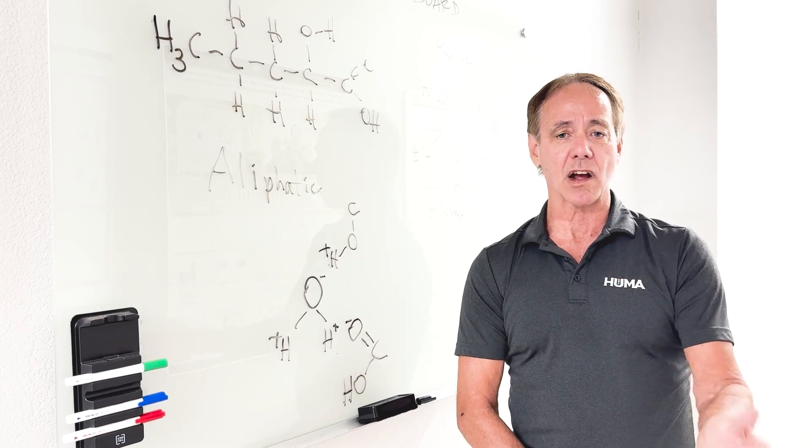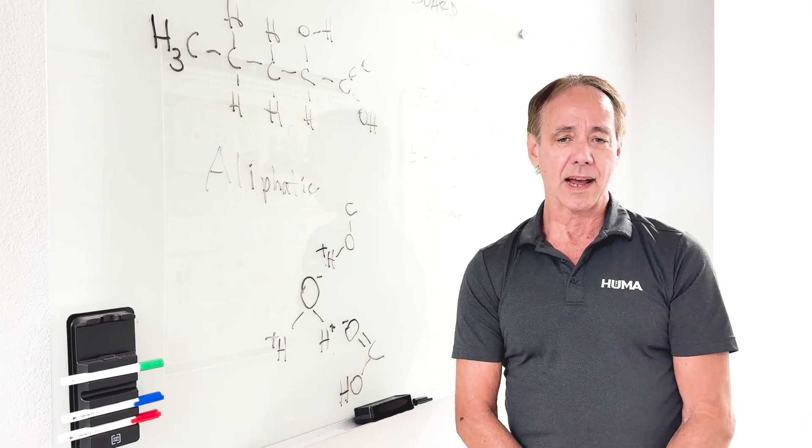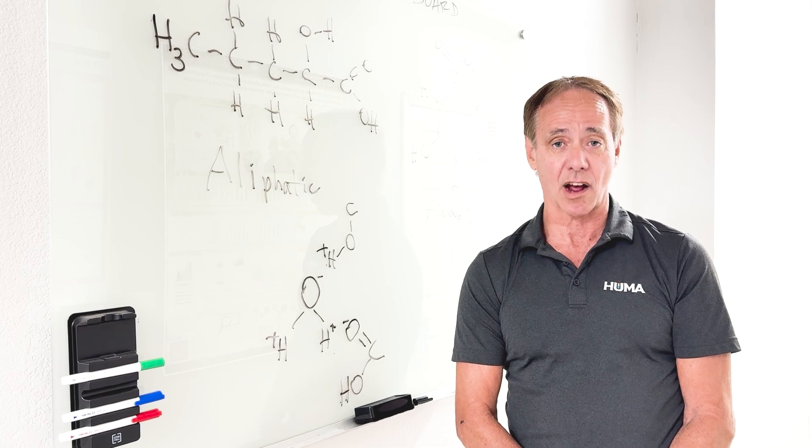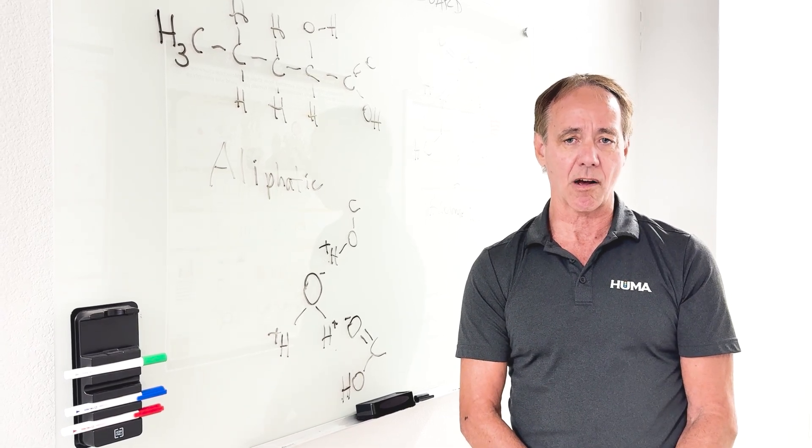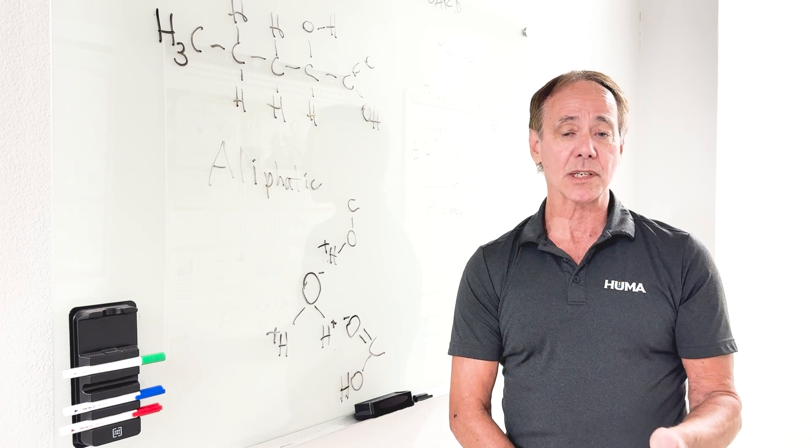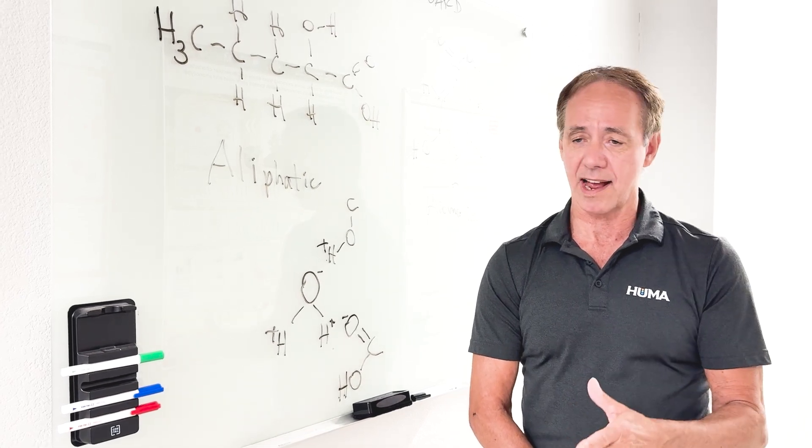Fulvic acids are soluble at all pHs, and then the humin fraction is insoluble. So when we're extracting it, the humin fraction gets left behind.